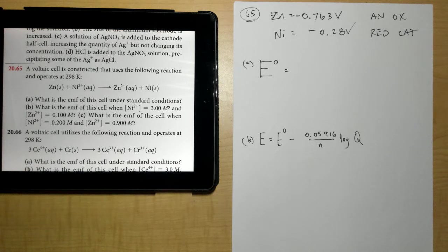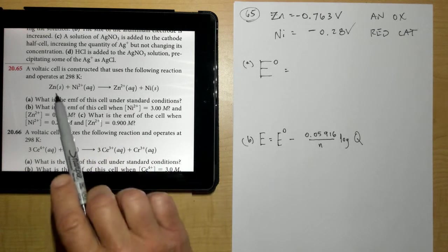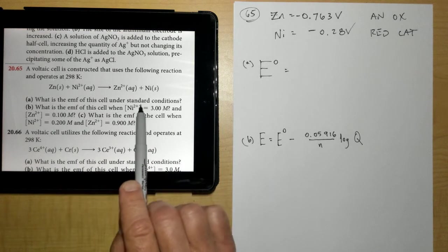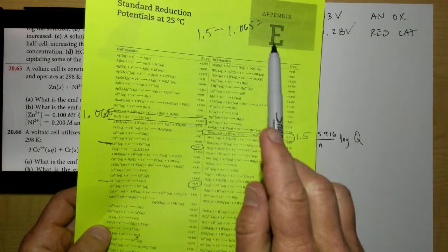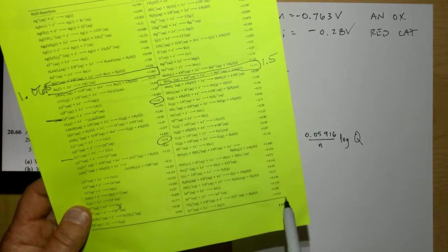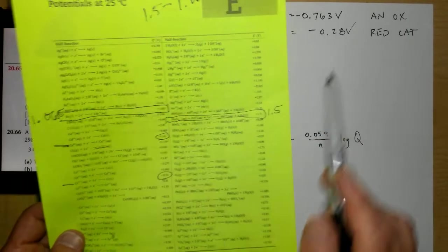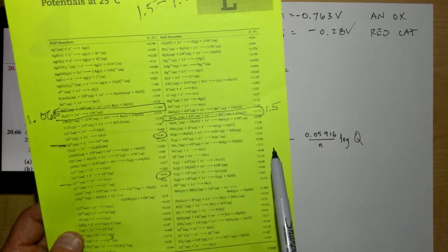Okay, so here's number 65. It says a voltaic cell is constructed using the following reaction. What's the EMF of the cell under standard conditions? So I look on the E° chart sheet right here and I find zinc down here at the bottom. I wrote it up here. And I find nickel a little ways above it right here.